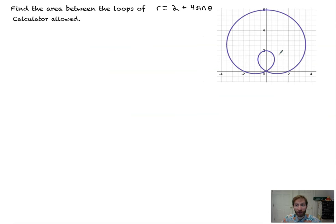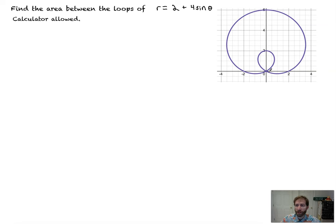Now, how do we find the area between the loops of 2 plus 4 sine theta? This one is a little bit nastier, and I'm only going to use symmetry here because it's very effective. We need to recognize that the area between the loops is all of the area between the outer and inner loop. It's really important to know where this curve starts and then go on from there.